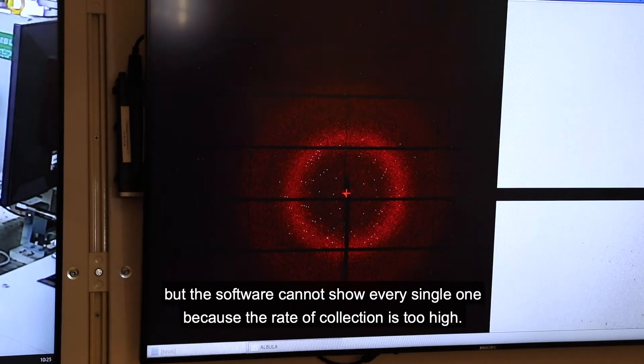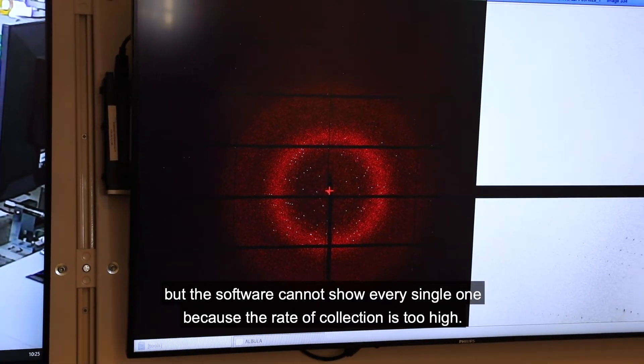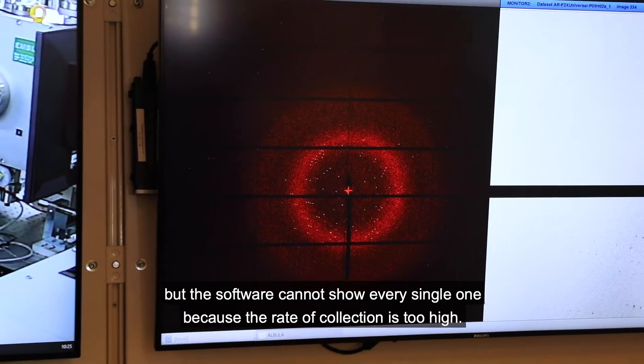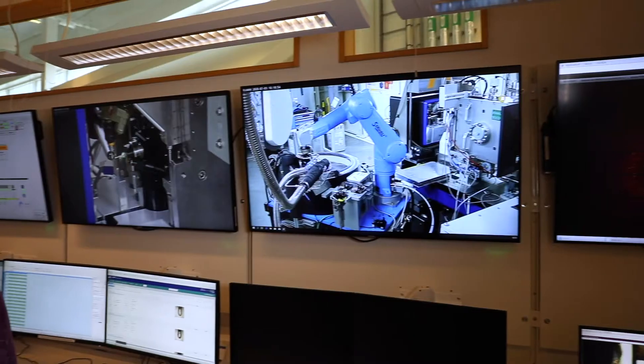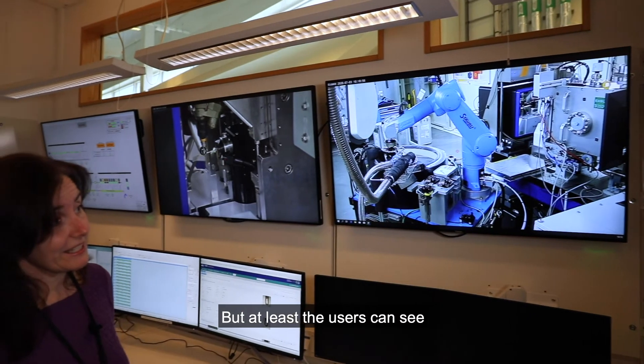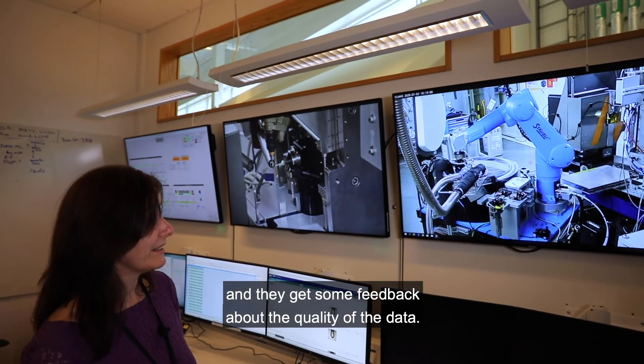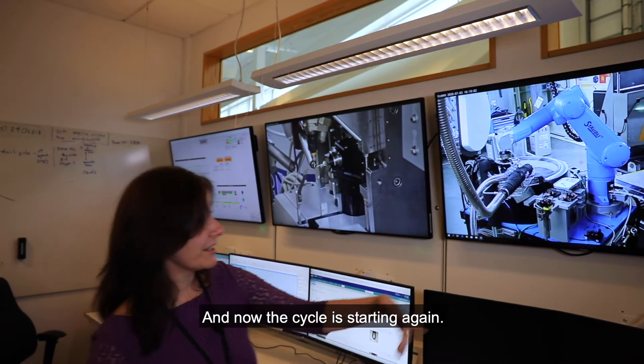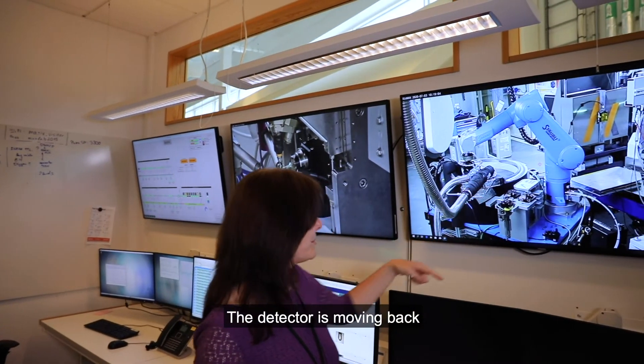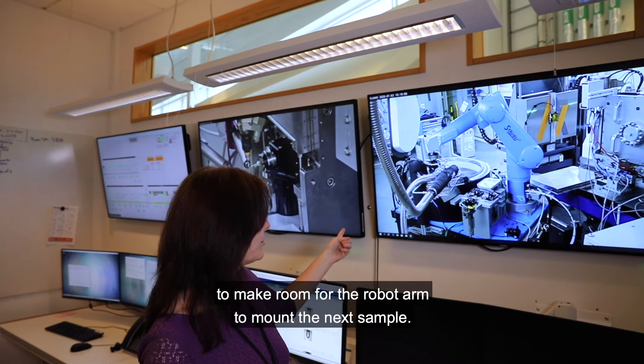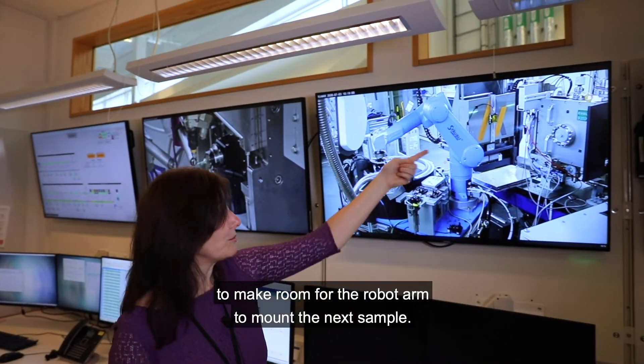But the software cannot show every single one because the rate of collection is too high. But at least the users can see, they get some feedback about the quality of the data. And now the cycle is starting again. So the detector is moving back to make room for the robot arm to mount the next sample.